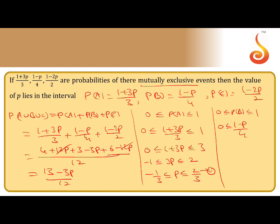For P(B): 0 ≤ (1 − p)/4 ≤ 1, giving 0 ≤ 1 − p ≤ 4. Subtracting 1: −1 ≤ −p ≤ 3. Multiplying by −1: −3 ≤ p ≤ 1. This is equation 2.